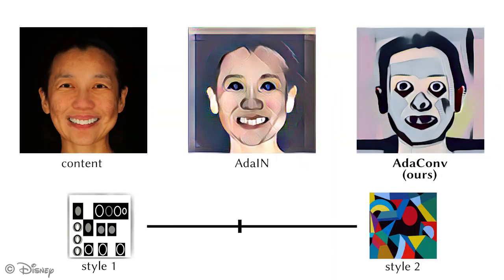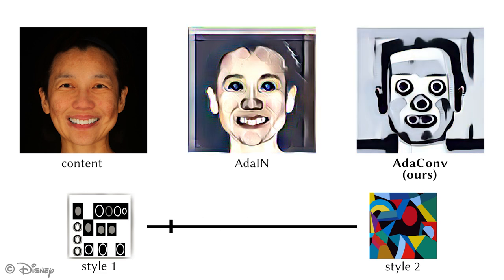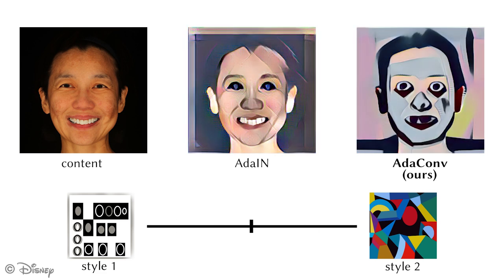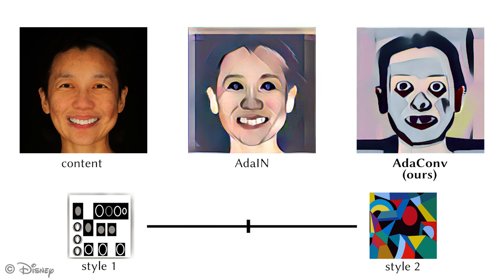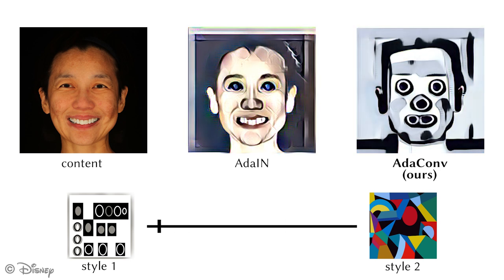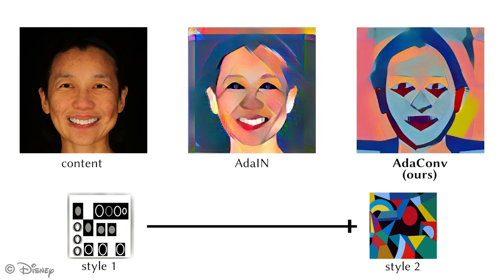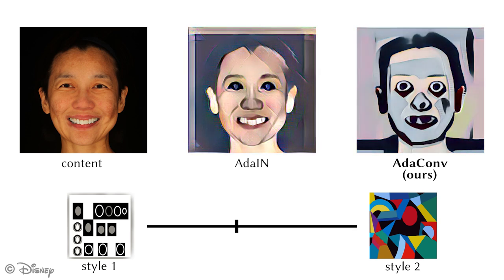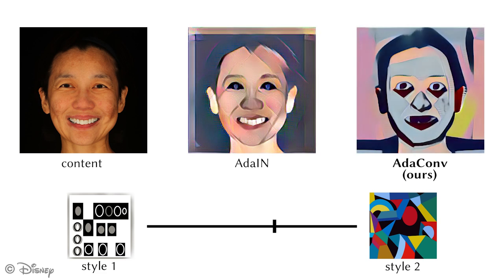Another example that showcases AdaConv's ability to capture the style structure better is style interpolation. Here we interpolate in the style feature space for two different style images and observe the resulting effect on the style transferred result. AdaConv smoothly interpolates between styles, while also capturing interesting spatial deformations which are lacking in the AdaIn result.